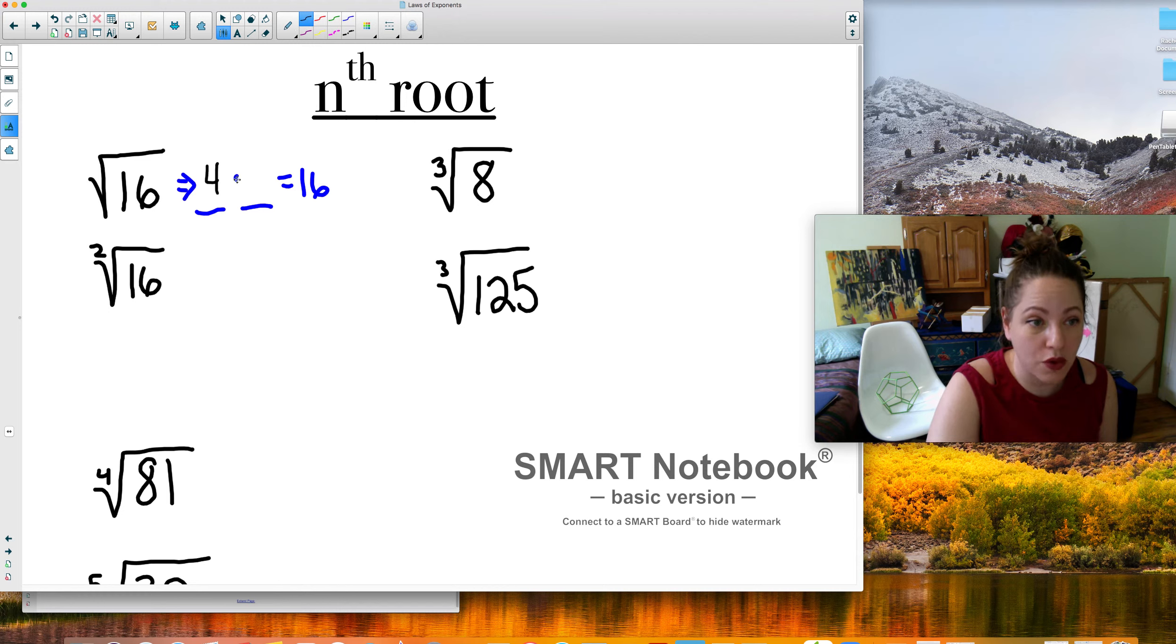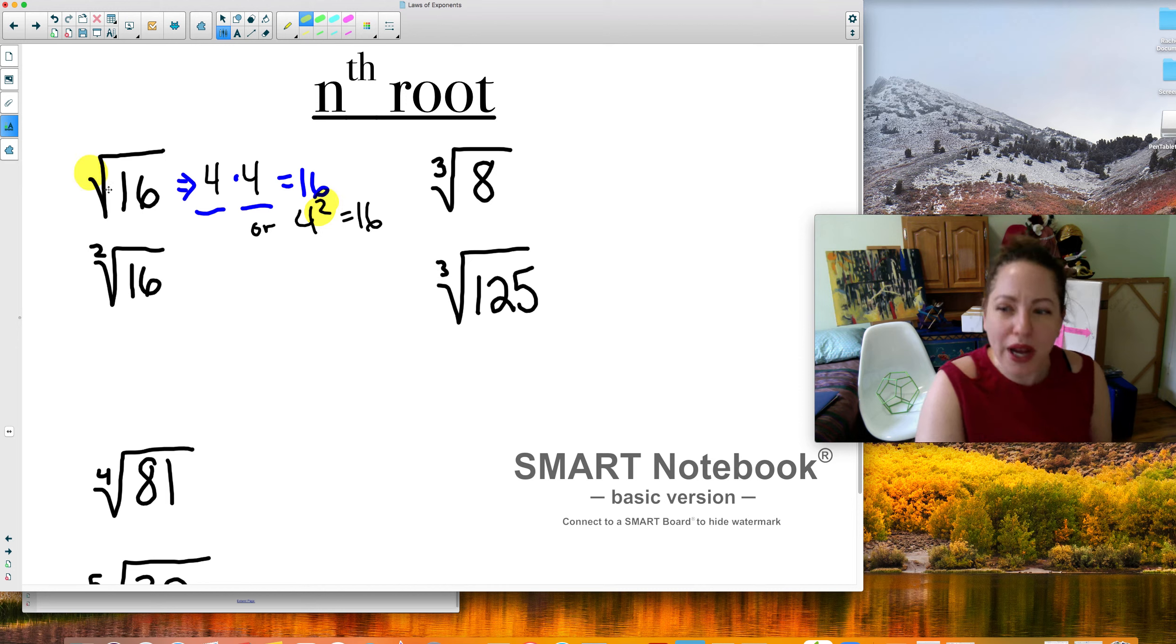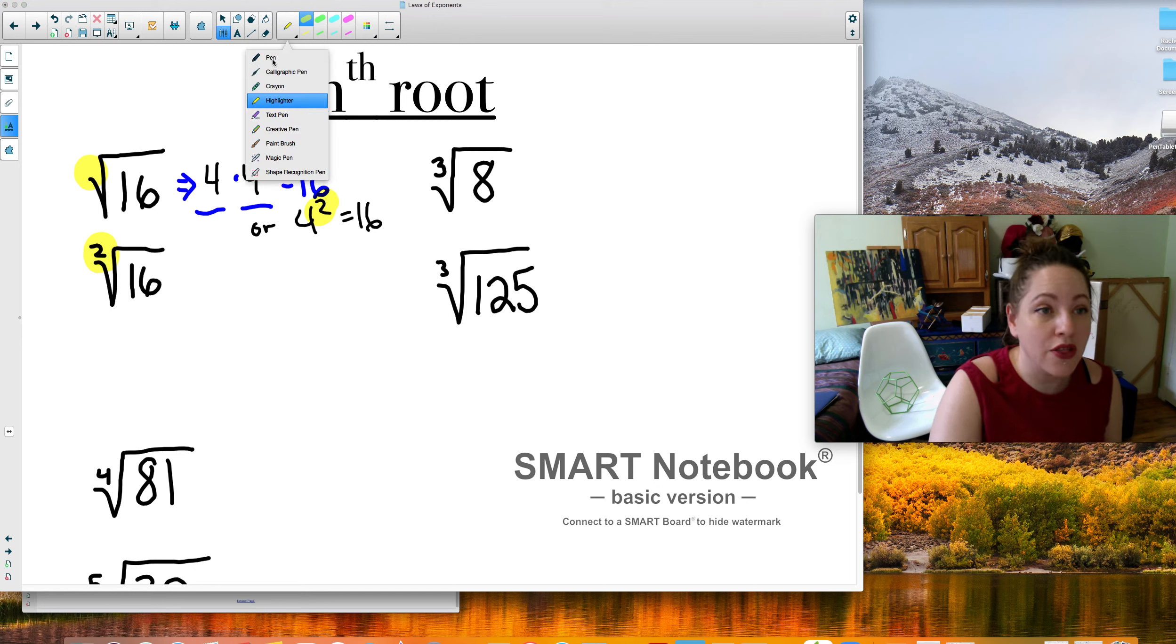We know that 4 times 4 twice equals 16, or 4 squared equals 16. That's the key here. Squared square root. But wait, there's no number there. There's an invisible 2, so this is really important. Invisible 2.